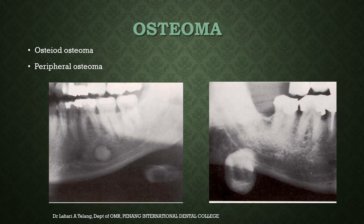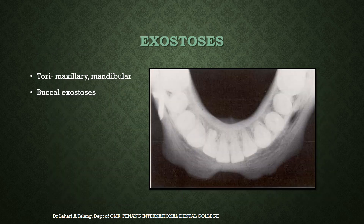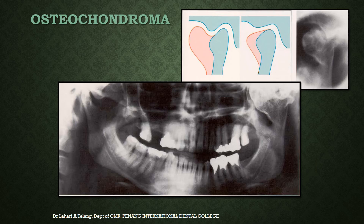Osteoma is a benign tumor arising from bone. It can be an osteoid osteoma within the body of the mandible or a peripheral osteoma extending beyond the lower border of the mandible. The mandible is one of the most favored sites. Exostoses are not tumors — they are hamartomas. An example is mandibular bilateral bony exostosis, which can also appear as buccal exostoses in the maxilla. Osteochondroma is an enlargement of the condyle of the TMJ arising from the condylar or coronoid process, appearing as a large radio-opacity with well-defined borders on the radiograph.